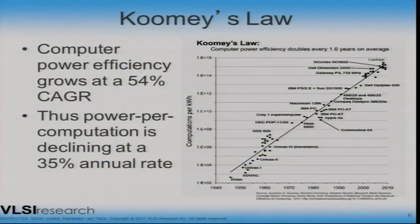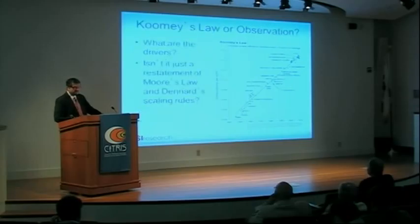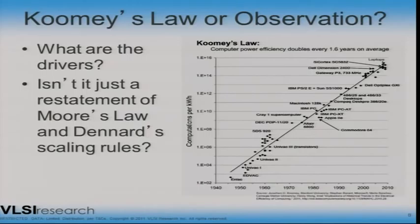Let's get into Kumi's law. Basically what they showed was you've got about a 50% compound growth rate in computations per kilowatt hour, going all the way back to ENIAC up to modern-day laptops. If you do the inverse, it says the power per computation is declining at a 35% annual rate, which happens to be equivalent to Moore's law. There's a paradox here: when we talk about power being in fashion today, why has it taken six decades for us to really see that we're becoming more power efficient? We just haven't really concentrated on it, but it's tended to come pretty naturally. I believe this is actually a restatement of Moore's law and Denard's scaling rules — that's the fundamental reason behind it.